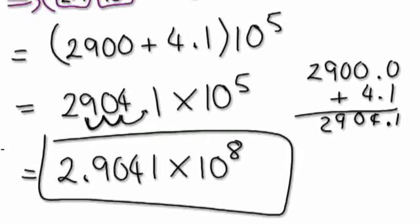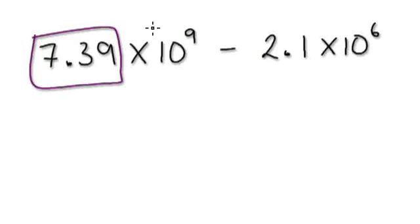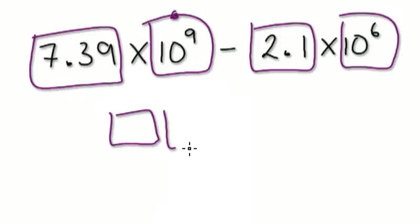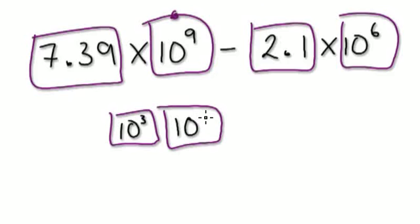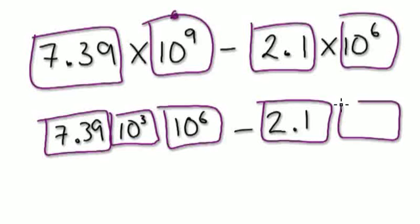So this would be your final answer. Next one here. Imagine that this times this, take away this times this. So break this up so that these are the same — break up the 10 to the power of 9 as 10 to the power of 3 times 10 to the power of 6. And then you've got this thing here, 7.39, take away 2.1 times 10 to the power of 6. Notice the 10 to the power of 6 here — they're the same, so we can factorize.